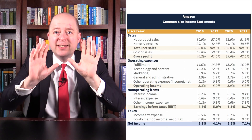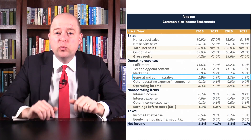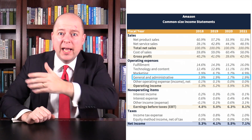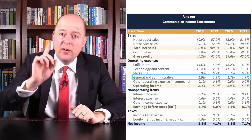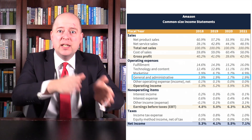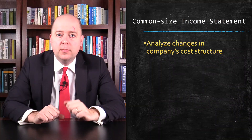For example, we can see that Amazon's G&A expense was consistently around 1.9% of net sales from 2018 to 2021. This means that 1.9 cents of every sales dollar went to G&A expense.